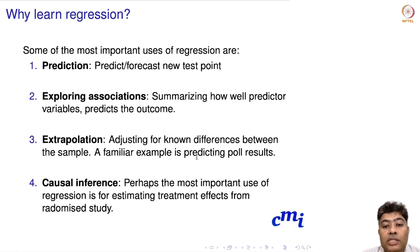Third, exploration: adjust for known differences between the samples. A familiar example is predicting poll results. And finally, causal inference: perhaps the most important use of regression is for estimating treatment effects from randomized studies. If you have a randomized clinical control study, you can make causal inference. In that case, regression and classification models play a huge role.